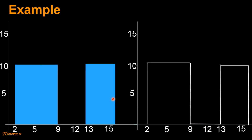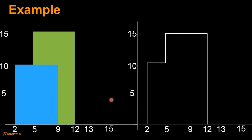Now let's look at an example where buildings seem to overlap when viewed from a distance. Note that in this example, part of the blue building between 5 to 9 is excluded from the skyline. That is because we are interested in only the outer contours of the buildings.